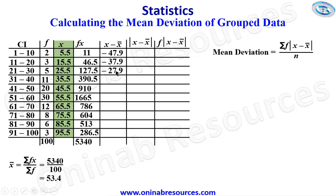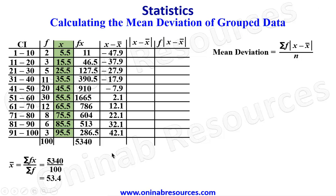Continuing x minus x-bar: 25.5 minus 53.4 gives negative 27.9; 35.5 minus 53.4 gives negative 17.9; 45.5 minus 53.4 gives negative 7.9; 55.5 minus 53.4 gives 2.1; 65.5 minus 53.4 gives 12.1; 75.5 minus 53.4 gives 22.1; 85.5 minus 53.4 gives 32.1; 95.5 minus 53.4 gives 42.1. Next we create the absolute value column.